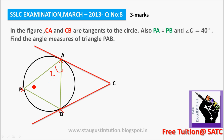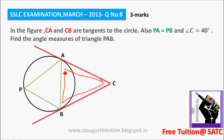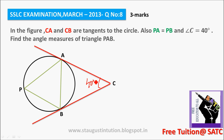It's very simple because we know that tangents drawn from a point outside the circle are equal. So consider triangle ABC. In this triangle, angle C is given as 40 degrees, and side CA is equal to side CB, so it is an isosceles triangle. The base angles are equal.